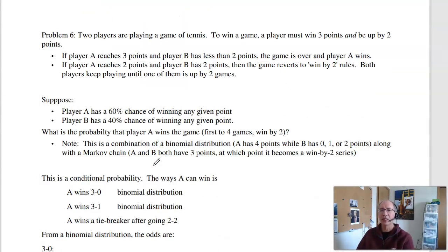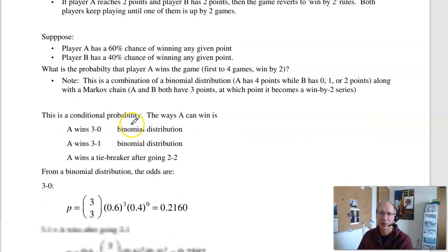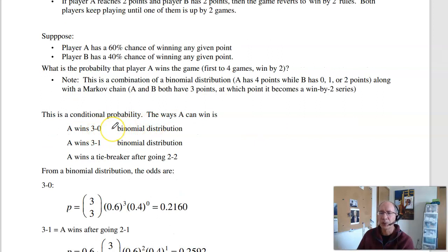The last problem is kind of a hard one. This is playing a game that's similar to tennis. And this game is going to be the first player to reach three points, win by two. So there's a couple ways that A could win. Suppose A's got a 60% chance of winning any given game. There's a couple ways A can win. A could go 3-0, the match is over. A could win 3-1, which actually means that A wins, and I start out at 2-1. Because if I start out at 3-0, the match is over. A third way that A can win is that A wins after going 2-2. So this is when you go into a Markov chain. These are binomial distributions.